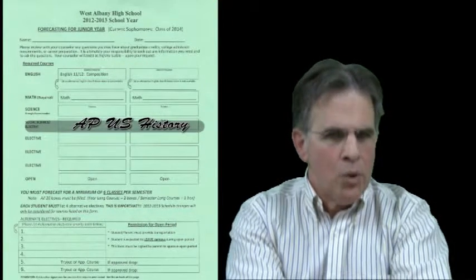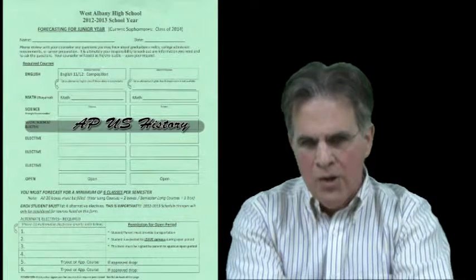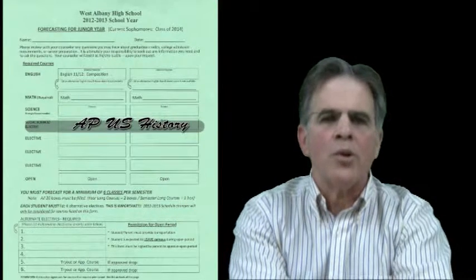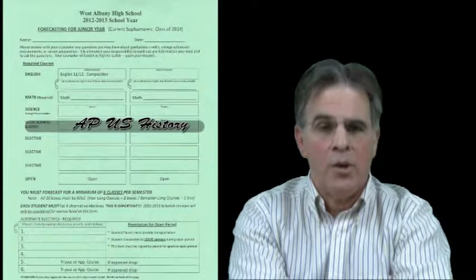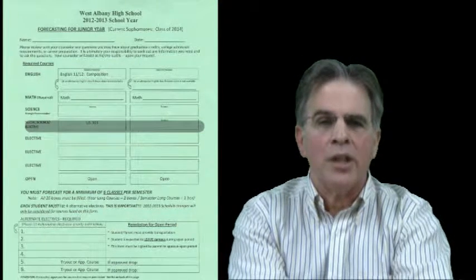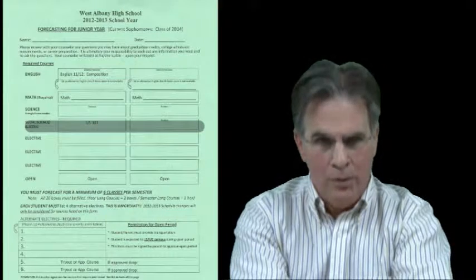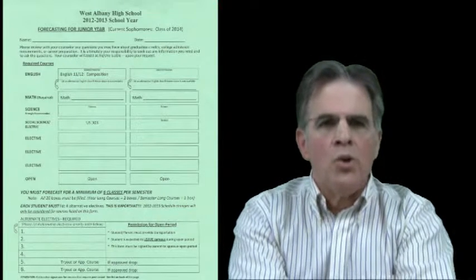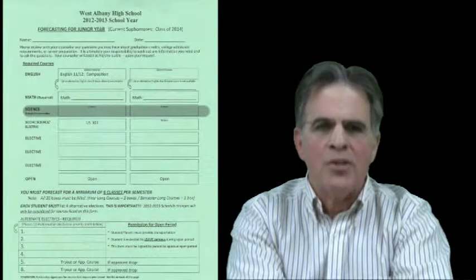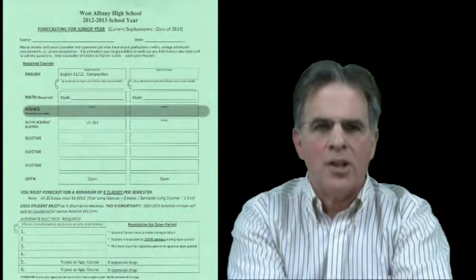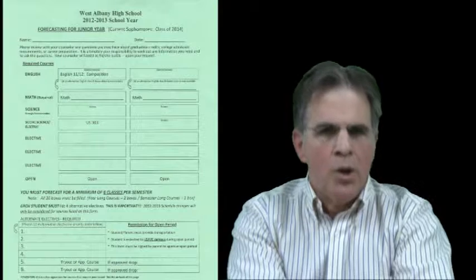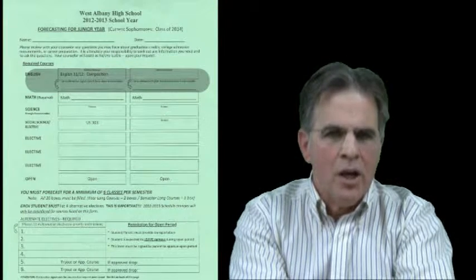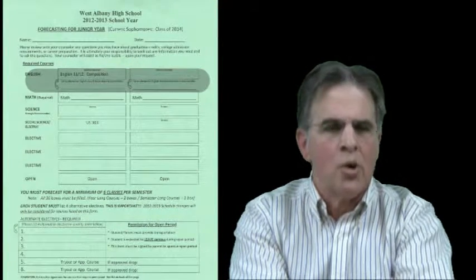If you are planning to be a valedictorian, you should forecast for AP US History. Understand that because it is an AP course, you should expect a more difficult and more rigorous curriculum than US 302 and US 303. Either this year or next year, you will need to take a Social Studies Selective class also. Most of you have taken Physical Science and Biology in your first two years. You could forecast for Chemistry, Anatomy and Physiology, or Physics, or two of the Science Selectives for your third credit of science. You have some options for your junior English Language Arts classes too. All juniors will take Composition and one other Selective from the list of choices in the course catalog.